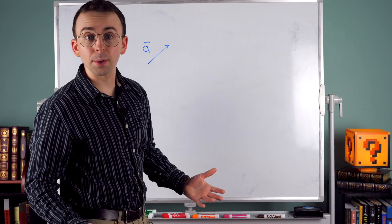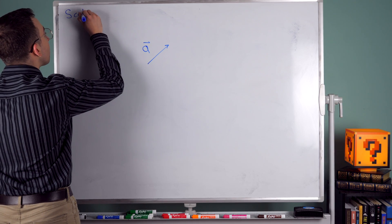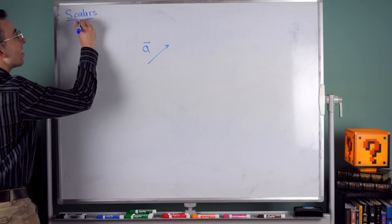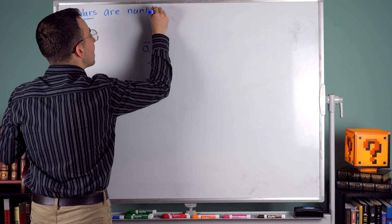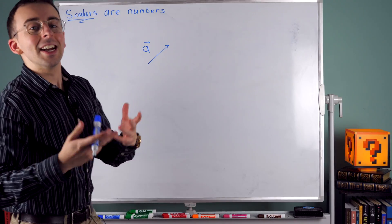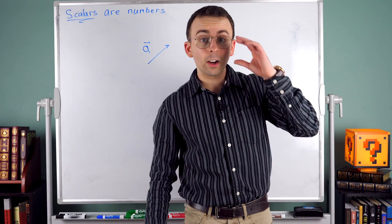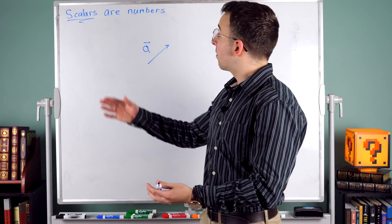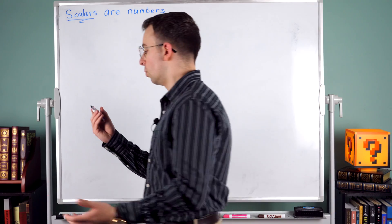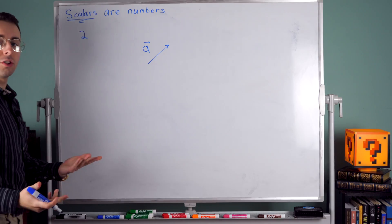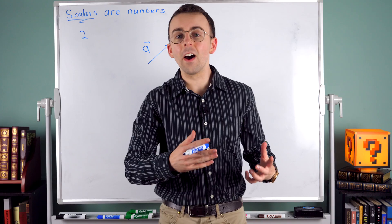Vectors don't always have to play with other vectors. We can introduce what are called scalars, which can also interact with vectors. Scalars are just real numbers — we call them scalars to distinguish them from vectors. These are things that have magnitude, like the number two has a magnitude of two, but they don't have direction. So it's a scalar, not a vector.